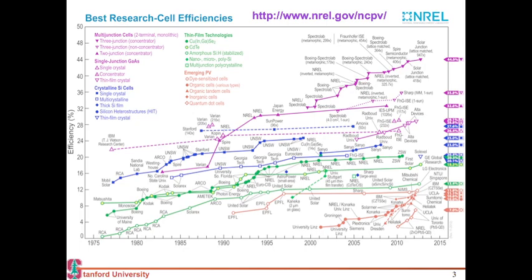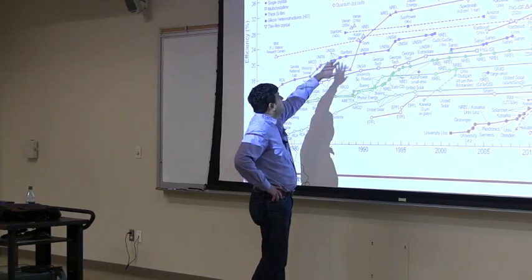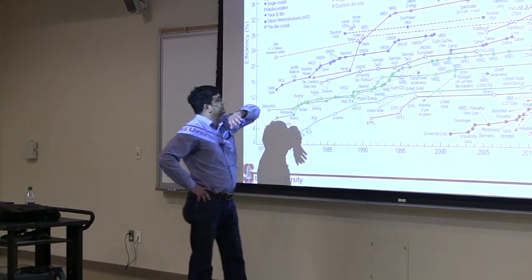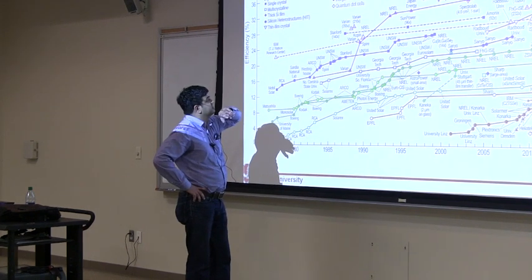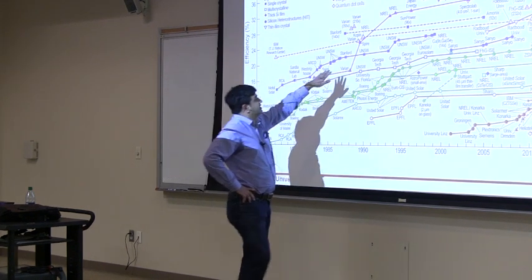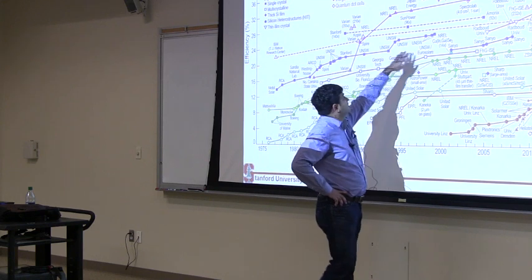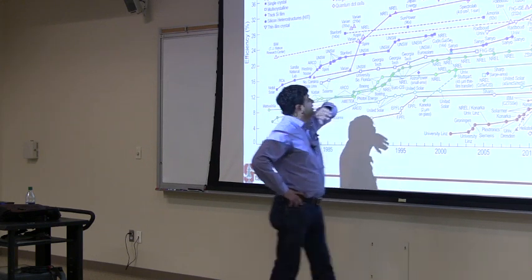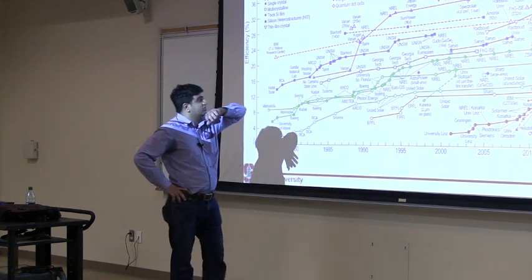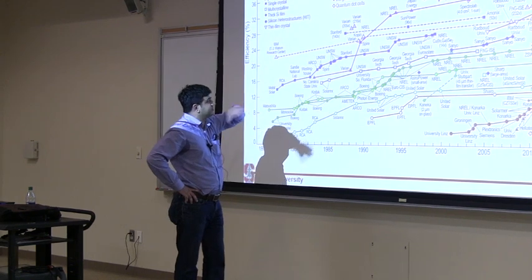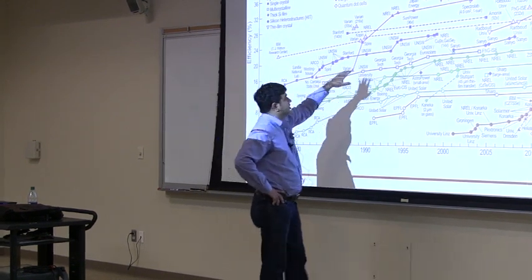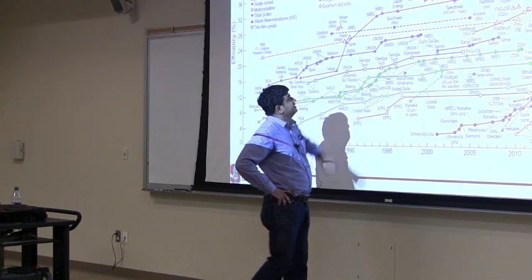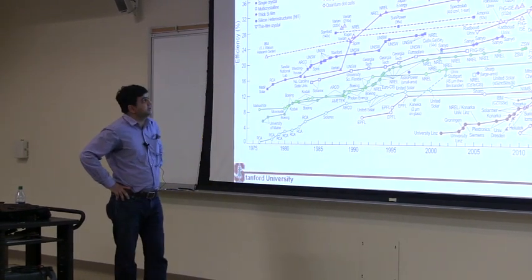For example, this at Stanford represents the back contact cell that was developed over here, which formed SunPower. Then all these laboratory cells from UNSW, a university in South Wales in Australia, driven by one guy called Martin Green.